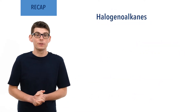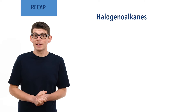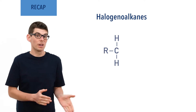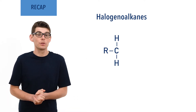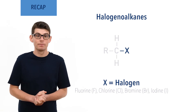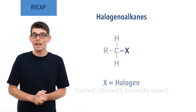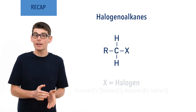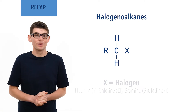Halogenoalkanes, also called haloalkanes, are a group of compounds that contain an alkyl group bonded to a halogen — fluorine, chlorine, bromine, or iodine. In simple terms, they are like an alkane where a halogen has taken the place of a hydrogen.